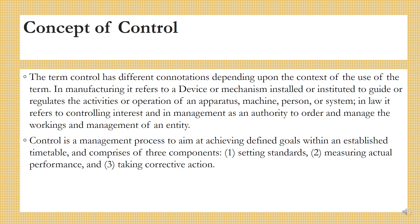Control is a management process to aim at achieving defined goals within an established timetable and comprises of three components: one, setting of standards; two, measuring actual performance; and three, taking corrective action. So, controlling is the process of ensuring that activities are producing the desired results.